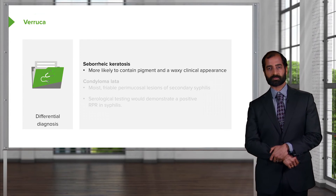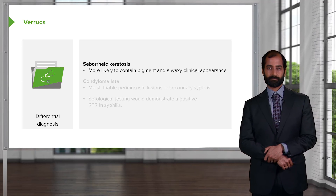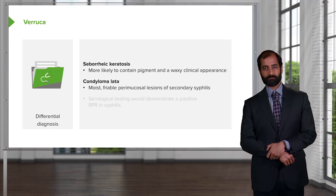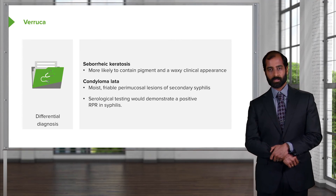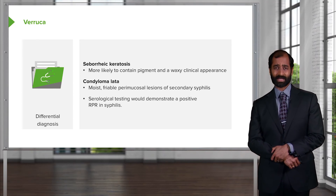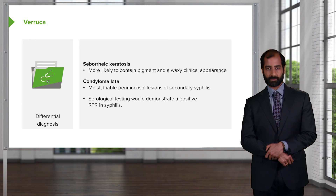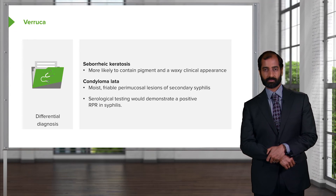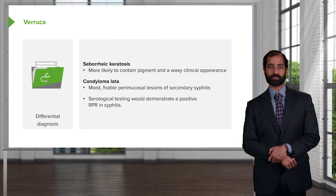Other differentials: seborrheic keratosis presents with that greasy, yellow, waxy appearance; in infants this is referred to as cradle cap. Also, condyloma lata — not to be confused with condyloma acuminata, which is verruca — refers to secondary syphilis. Condyloma lata is found in moist mucosal areas, and serologic testing such as RPR would be positive for syphilis. A mnemonic: 'I want a lot of syphilis' to remember lata equals secondary syphilis, while acuminata equals HPV.